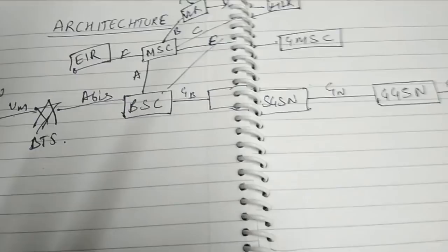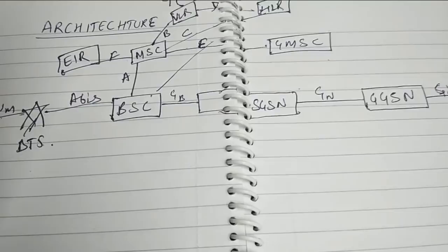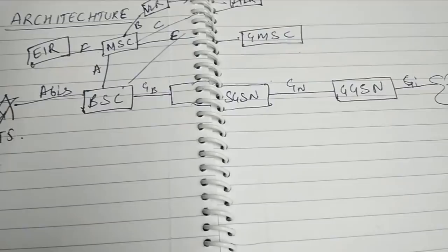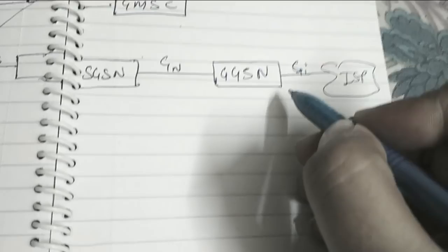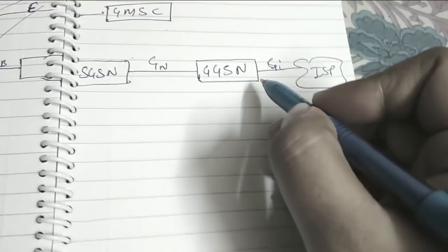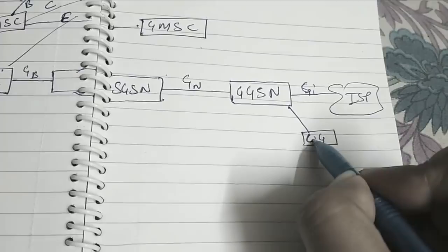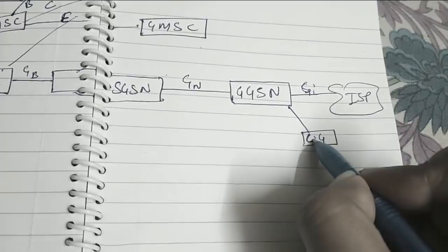Now we will see how different nodes are connected to the GGSN and SGSN by different interfaces. Let's talk about the GGSN first. GGSN is connected to the Charging Gateway. In Nokia, we call it as a Charging Gateway.